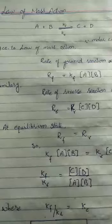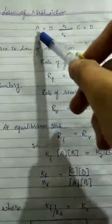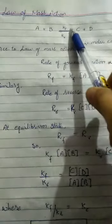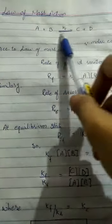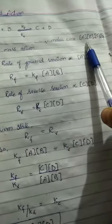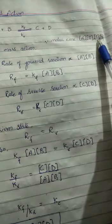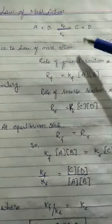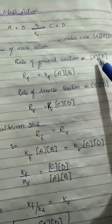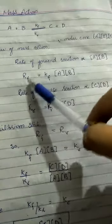To derive the Law of Mass Action, consider a reaction where A and B are reactants that form products C and D. The forward rate constant is kf and the reverse rate constant is kr. The molar concentrations of reactants and products are represented in square brackets. According to the Law of Mass Action, the rate of forward reaction is directly proportional to the product of molar concentrations of the reactants.